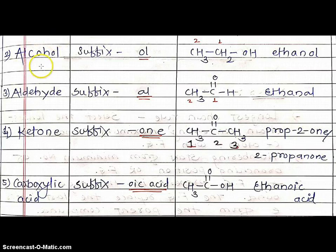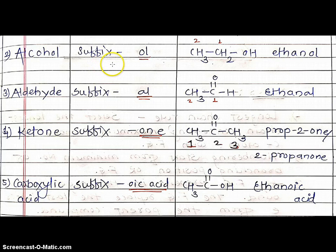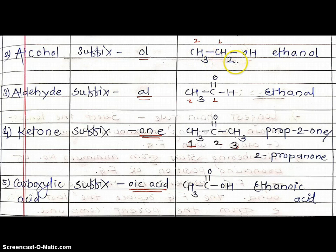Next example: alcohol functional group — add suffix -ol. The corresponding alkane ending -e is replaced by -ol. Example: CH3CH2OH — 2 carbons, called ethane; replacing -e with -ol gives ethanol. The name of the organic compound is ethanol.